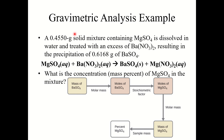We want to find mass percent of MgSO₄. We know the total sample mass, so we need to find grams of MgSO₄. We go from grams BaSO₄ → moles BaSO₄ using molar mass → moles MgSO₄ using stoichiometric coefficients → grams MgSO₄ using molar mass. Then divide grams MgSO₄ by sample mass and multiply by 100% for the mass percent.